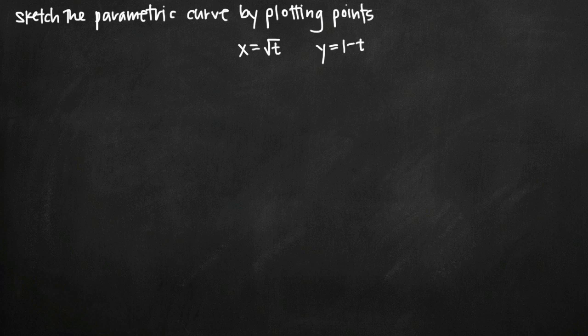Today we're going to be talking about how to sketch a parametric curve by plotting points along the curve. In this particular problem we've been given the parametric curve defined by these two equations: x equals square root of t and y equals 1 minus t.